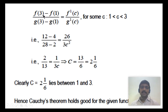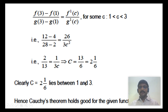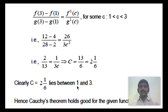Clearly g'(x) is not equal to 0 for all x in open interval (1,3), so f(x) and g(x) satisfy all the conditions of Cauchy's mean value theorem. By Cauchy's mean value theorem there exists a point c in open interval (1,3) satisfying f(3) minus f(1) divided by g(3) minus g(1) equals f'(c) divided by g'(c). Substituting all values and solving for c, we get c = 13/6, which equals 2 and 1/6. This value clearly lies in open interval (1,3), so Cauchy's mean value theorem is verified.